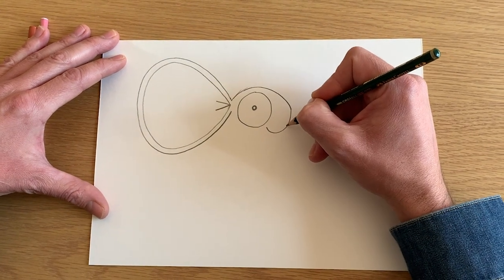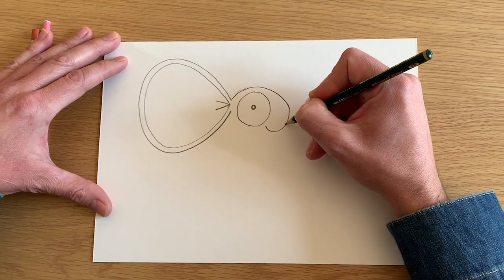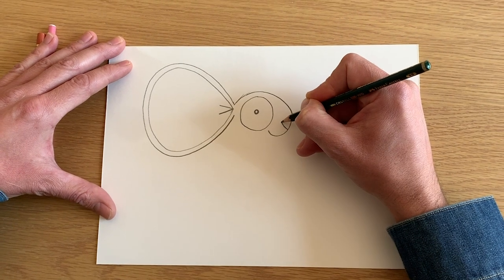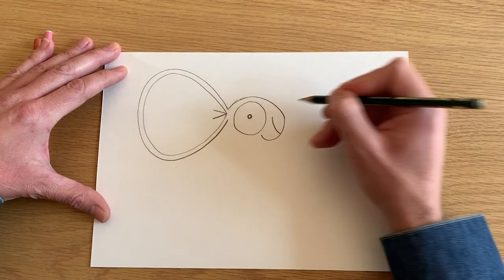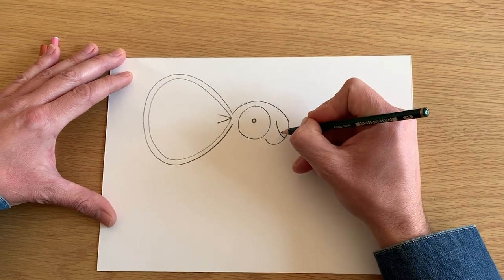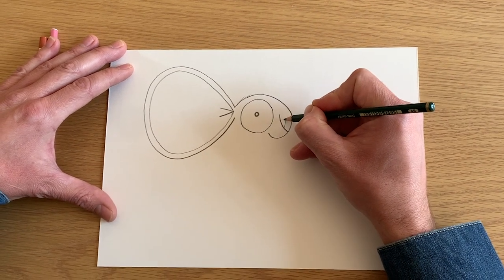And then about halfway from that line you've just drawn, you're going to do a line up for the nose. And inside you do a number nine.